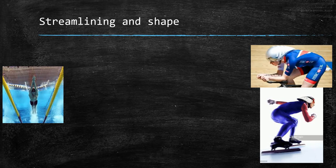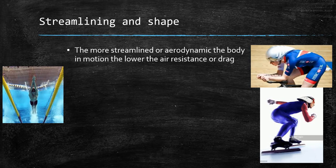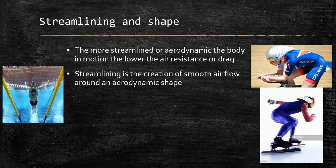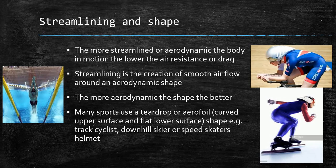This links to the third factor: streamlining and shape. The more streamlined or aerodynamic the body in motion, the lower the air resistance or drag. Streamlining is the creation of a smooth airflow or water flow around an aerodynamic shape — for example, a swimmer with hands together forces water to flow smoothly around the outside of the body. Many sports use a teardrop or aerofoil shape — a shape with a curved upper surface and a flat lower surface — because it is highly aerodynamic.